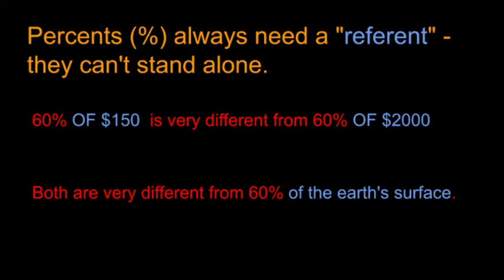Alluded to this with the blanks, percents always need a reference. That's a big word, but a reference means something that is referred to. All these things that I put in blue, those are referents. 60% does not actually mean anything until I attach it to a referent. That's why 60% of $150 is $90 I think, and 60% of $2,000 would be $1,200.